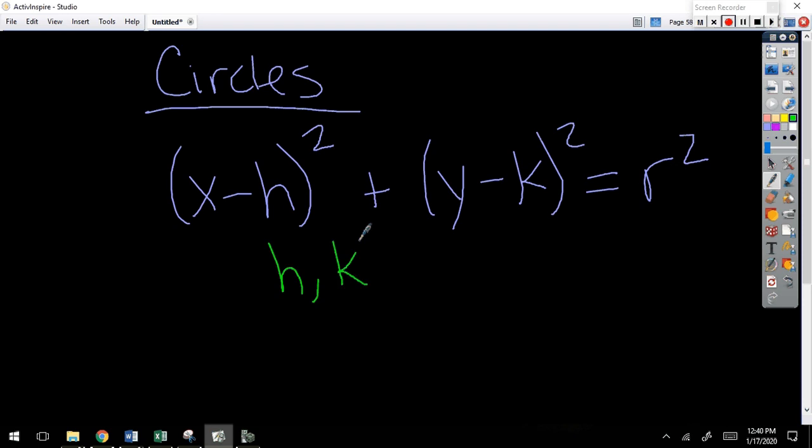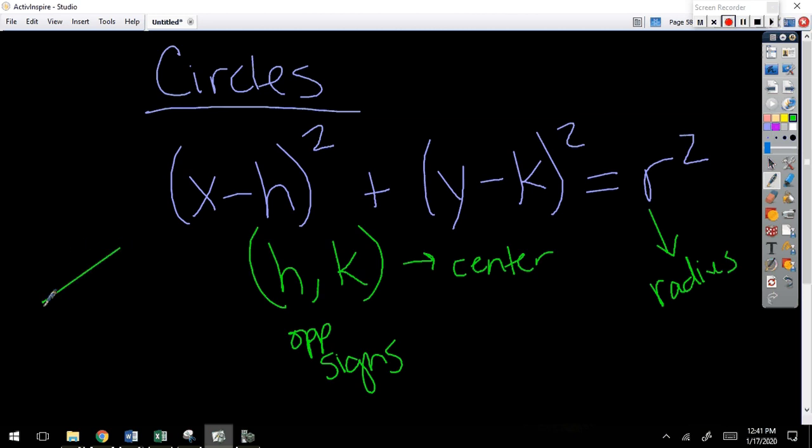H and K, and you have to change the signs on them because they start negative, so opposite signs. H and K, that's your center point. That's the very center of the circle. And r, and notice this is r squared, so whatever this value is you'll have to take the square root of it. r squared is your radius. Now, what is the radius of a circle? Half, halfway across, right?